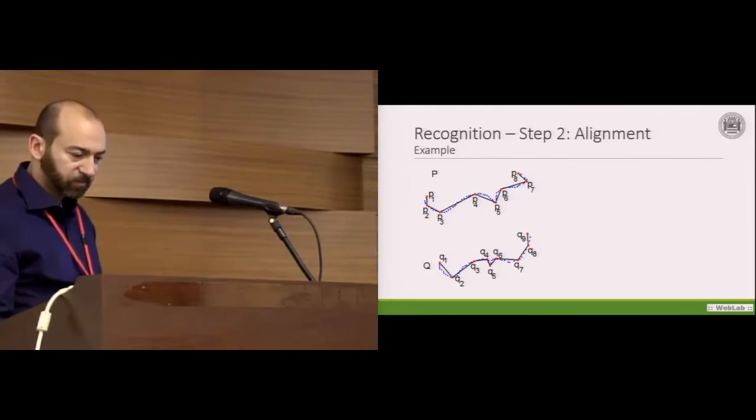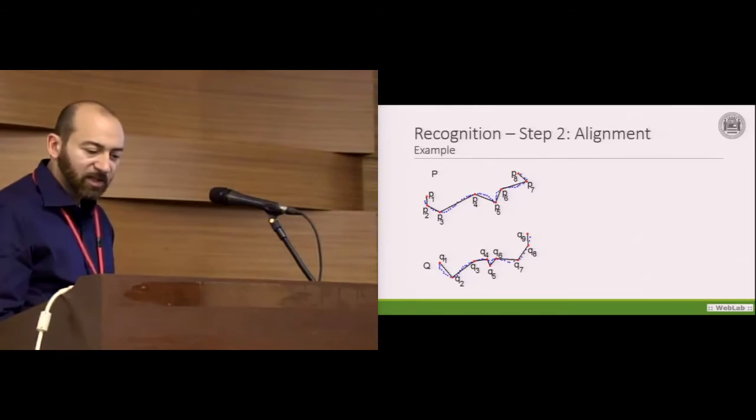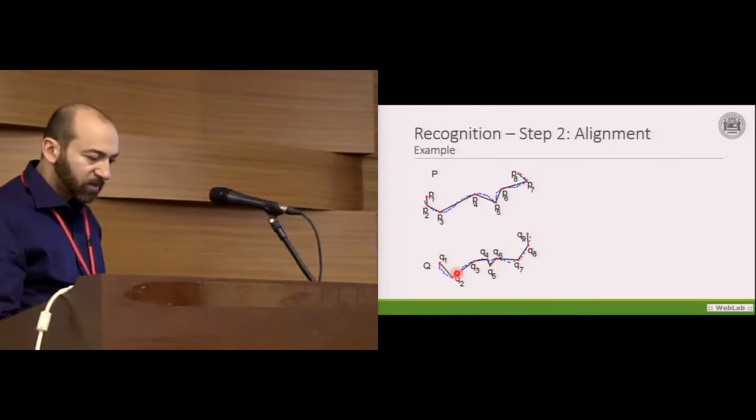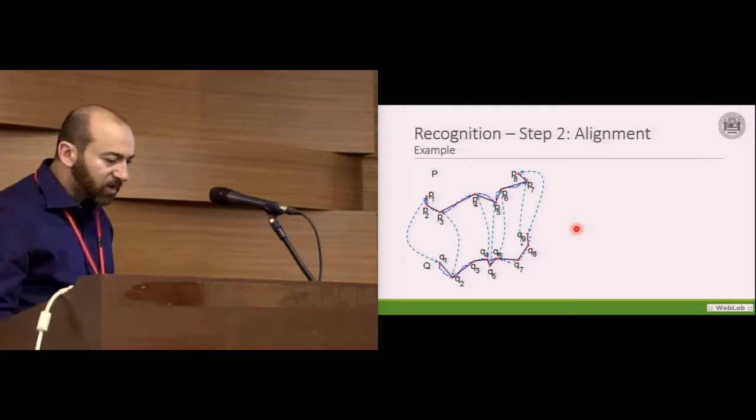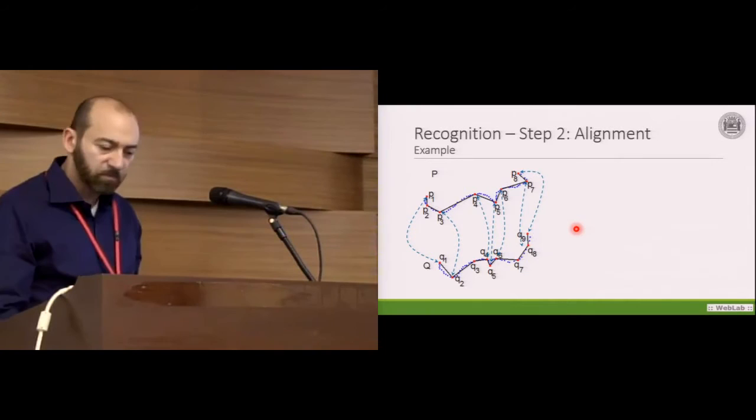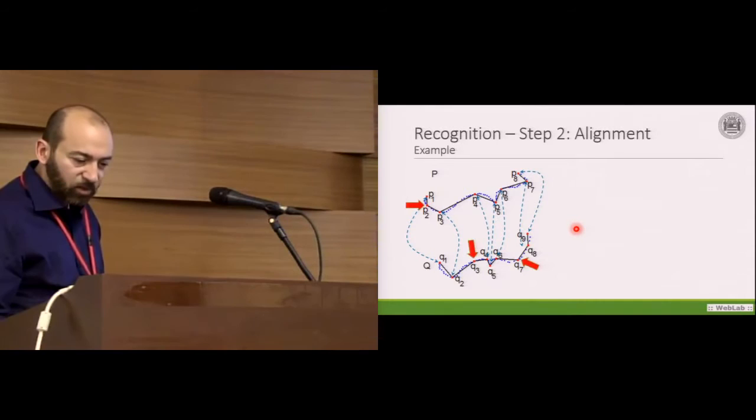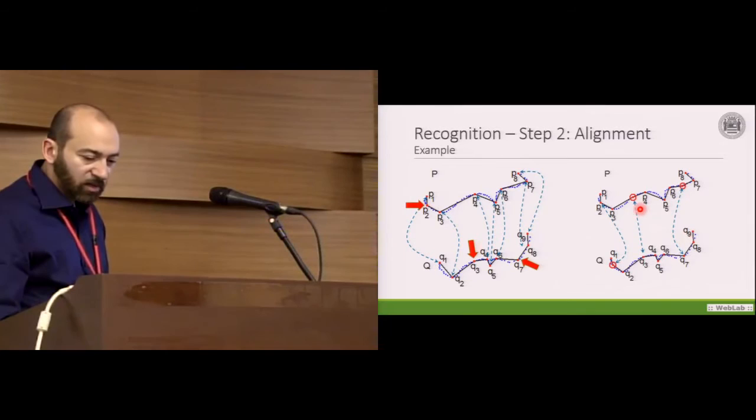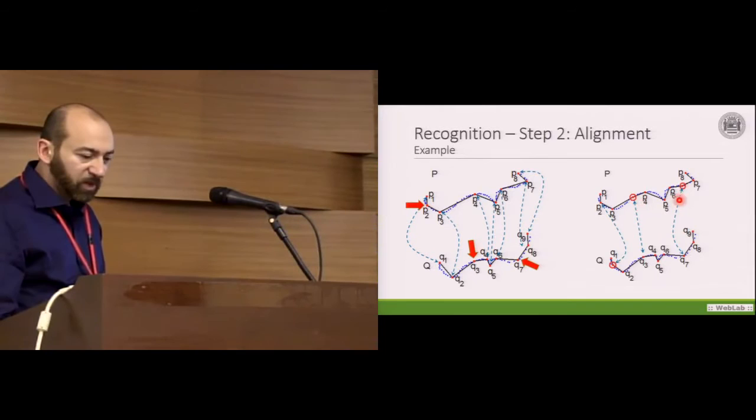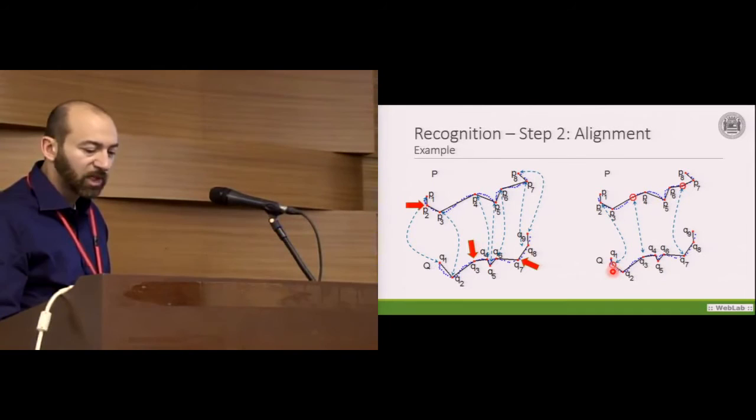The alignment is performed through an adaptation of a string matching algorithm, and details on this are in the paper. Here we have an example of alignment. In this example, we have two polylines representing a curly brace: P with eight points and Q with nine points. The endpoints are mapped to each other, and the internal points are mapped by similarity using the features described in the previous slide. As we can see, some points do not have a corresponding similar point in the other gesture. What we do is sample a new point from the gesture, approximately in the same position. In the end, we have two polylines of ten points each.